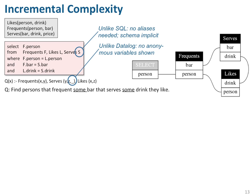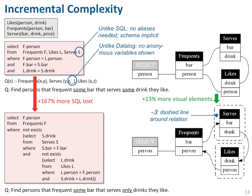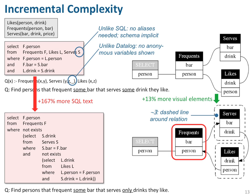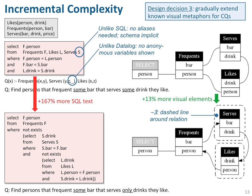Next, let's look at a query with quite similar intent but slightly different: find persons that frequent some bar that serves only drinks they like. Note that the SQL statement has become quite more complex. In proportion, our visualization has only a marginal increase in complexity. The only thing we need to know up front is that the dashed box means 'not exists.' So let's read this query: select persons that frequent some bar that do not serve any drink which is not liked by this person.